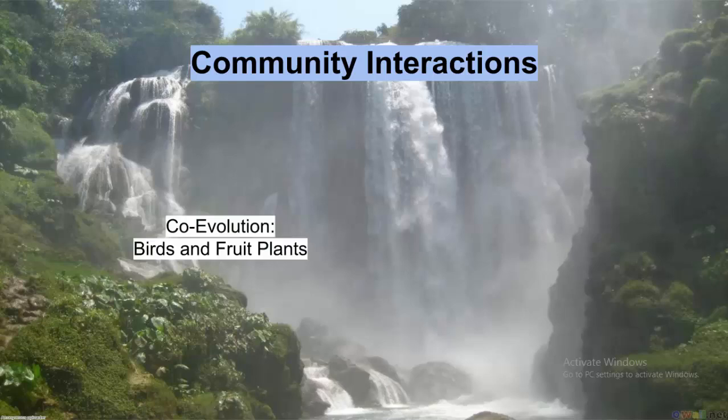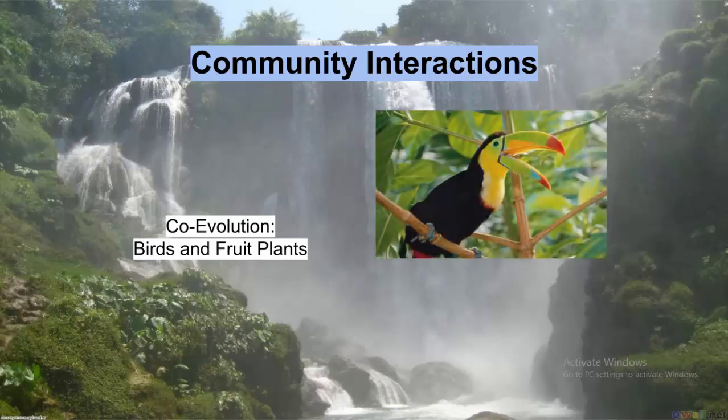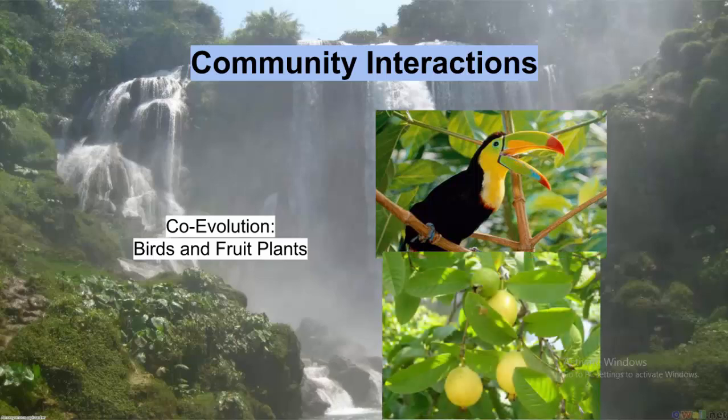Co-evolution is also very important to the community. For instance, many fruit-eating birds, like toucans, co-evolve with the plants whose fruits they eat, like guavas. Many characteristics of fruit plants have evolved to facilitate seed dispersal, and in response, the behavior and diets of birds have also changed.